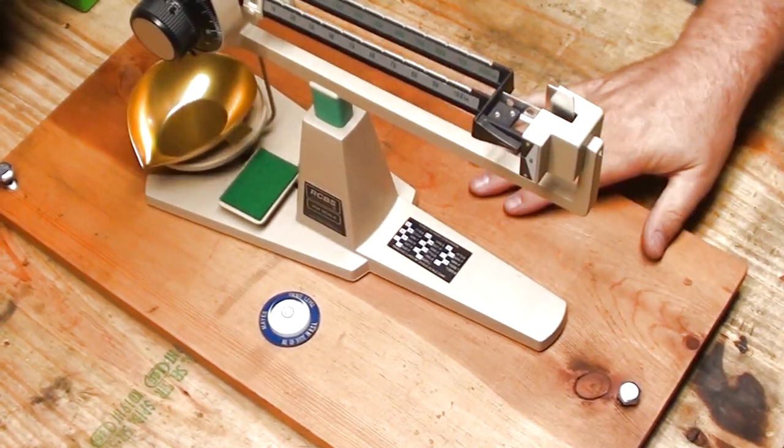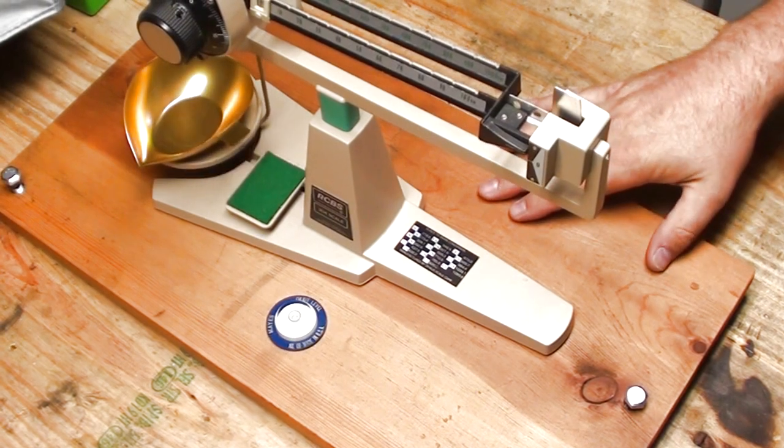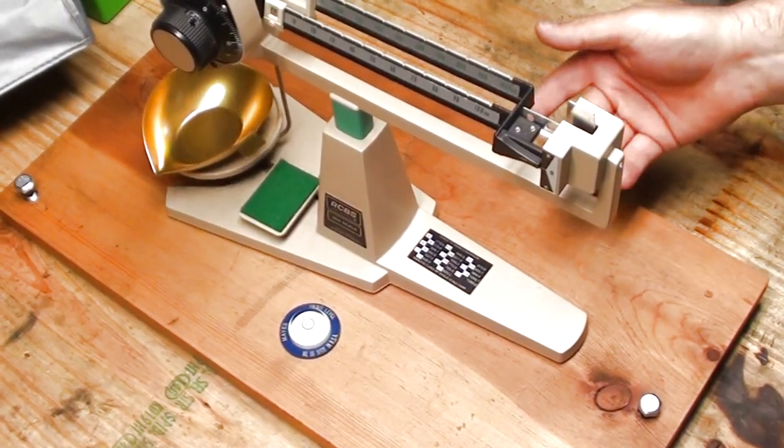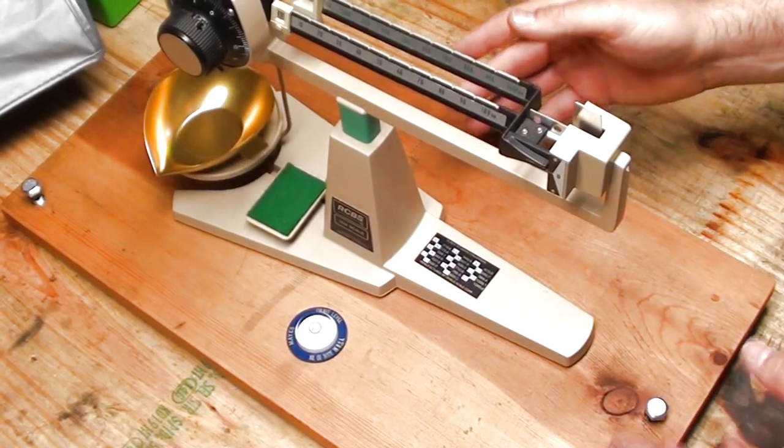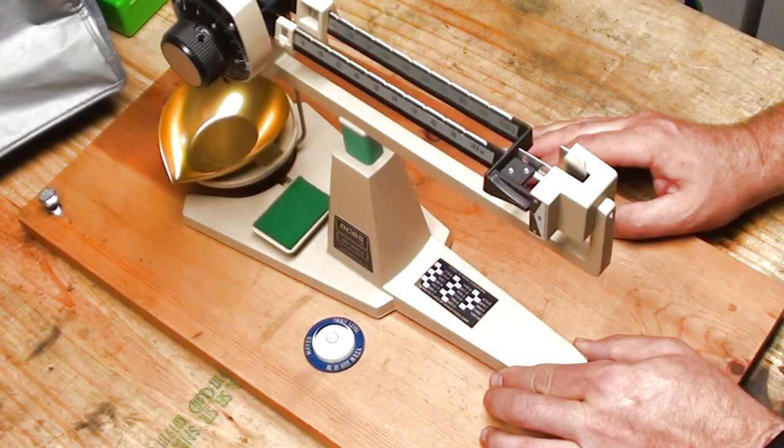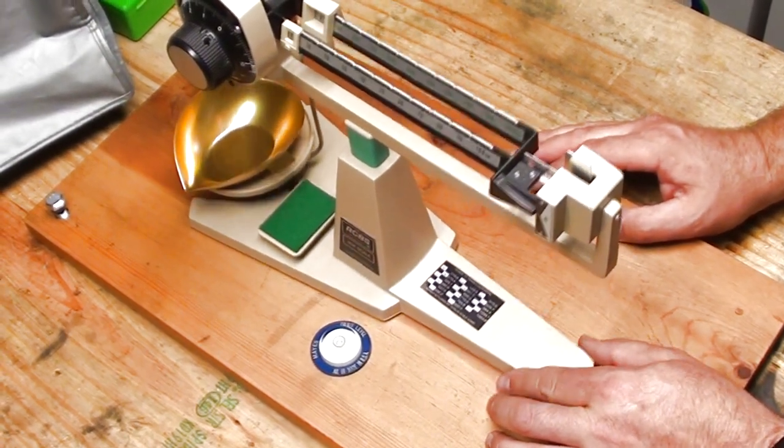This is a scale board that I whipped up just to keep things level underneath the scale. As you may or may not know, having a scale that's not on a level surface will cause you to have to re-zero it every time you move it, even if you just bump it a little bit like this.